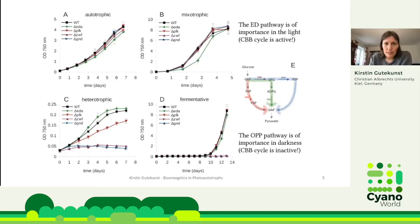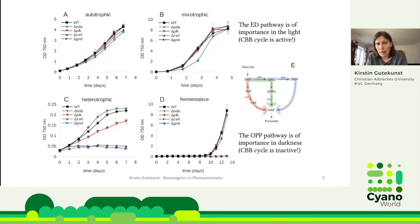What you can see here is the growth under phototrophic conditions. All mutants grow rather well, with a slight diminished growth in the mutant in which the ED pathway is knocked out. This doesn't look very significant, but when we analyzed a lot of mutant strains with many repetitions, we saw that this difference is actually also significant. Under mixotrophic conditions, it's again the ED pathway which is most important — meaning that when the Calvin-Benson cycle is active, the ED pathway is the most important route.